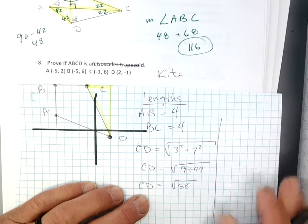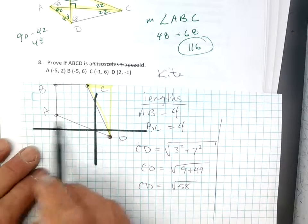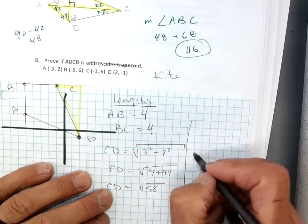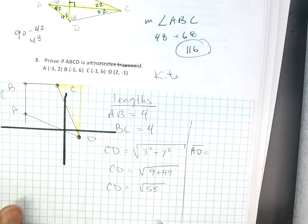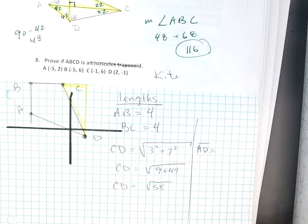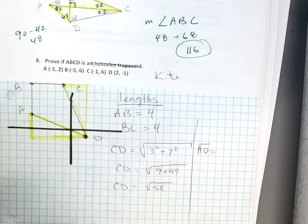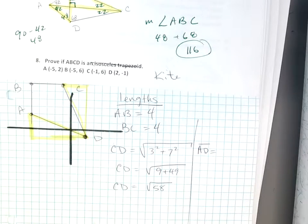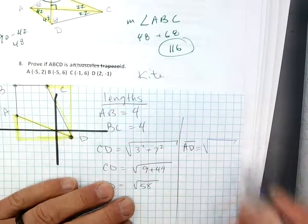Now, it'd be great if A, D had the same length. Am I going too fast? So if I want to find A, D, I'm going to do the same thing, okay? So A, D, let's see, make a right triangle out of that, okay?